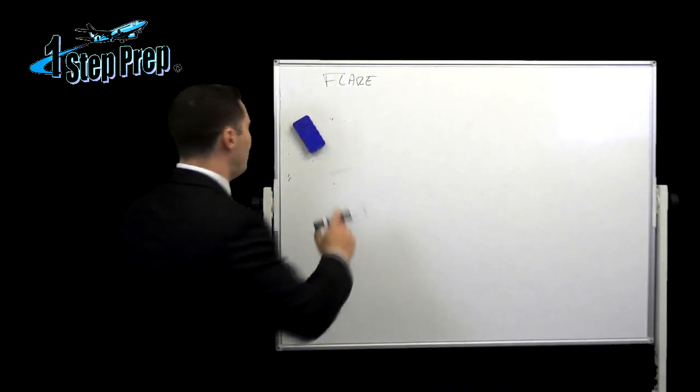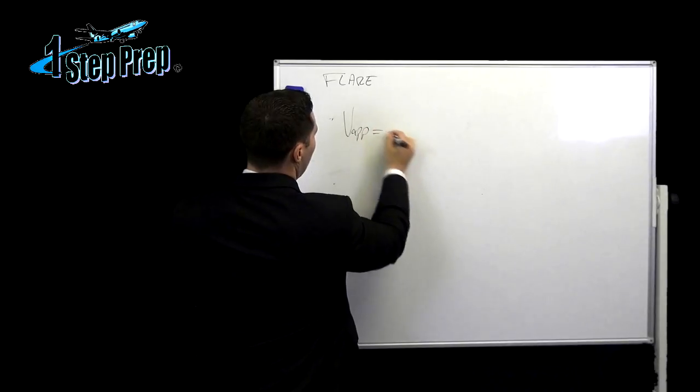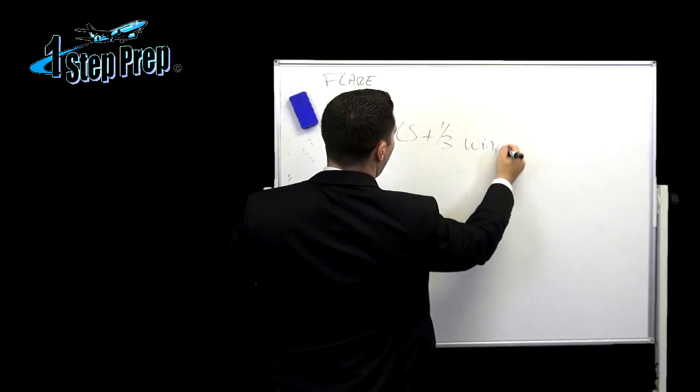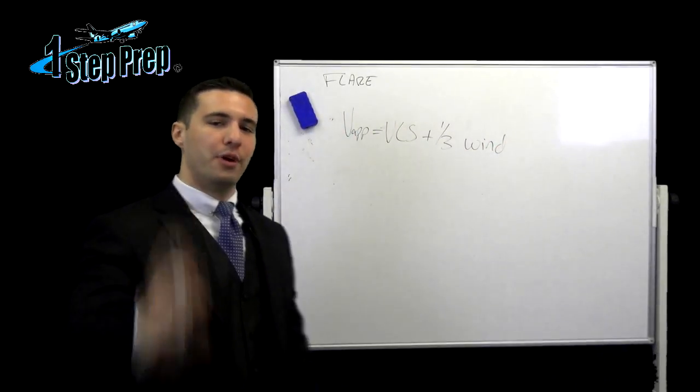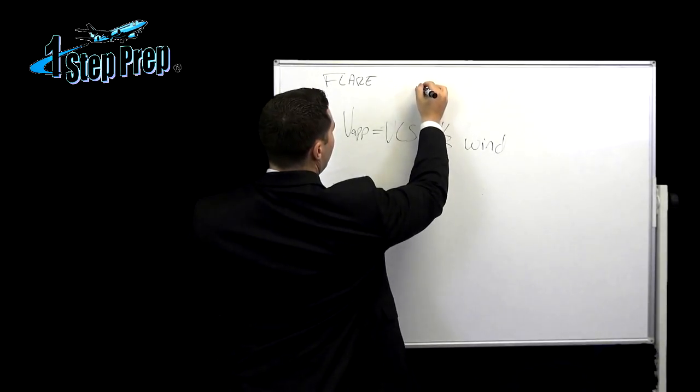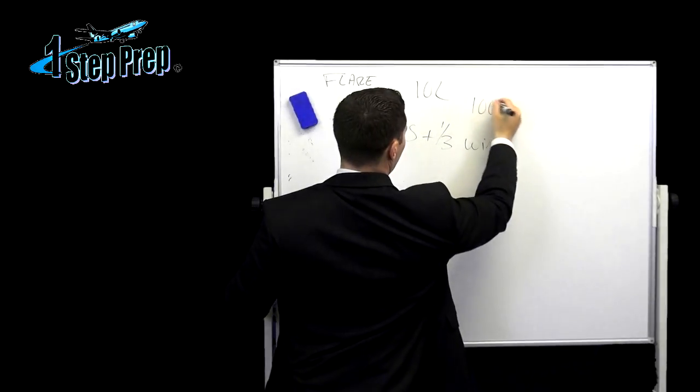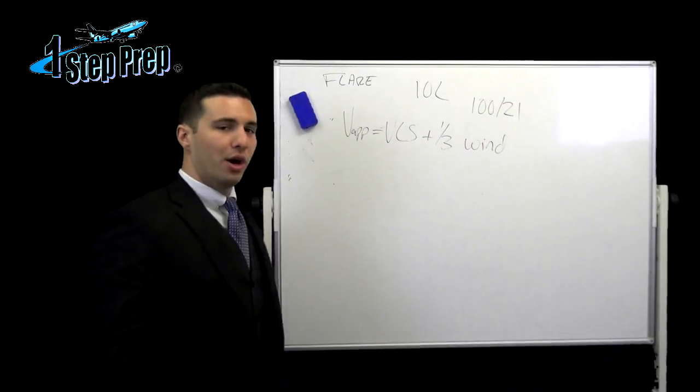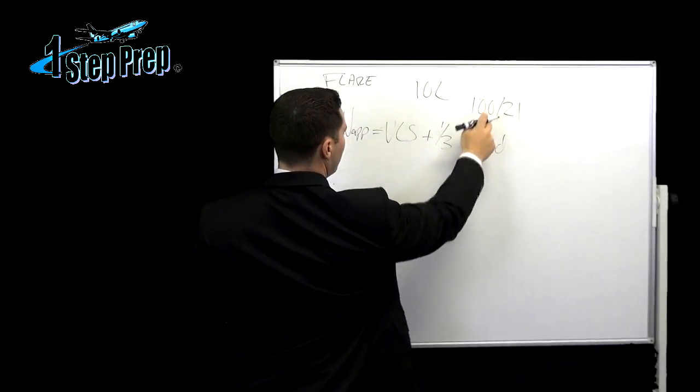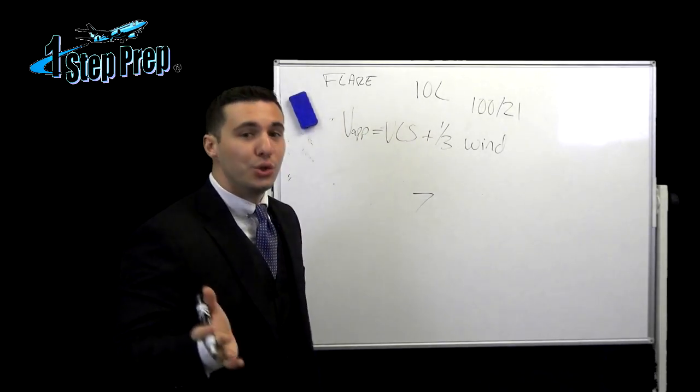How does the airplane do that? The first thing you need to understand is what V app is. V app in this aircraft equals VLS plus one third of the wind component that you enter on the perf approach page. Let me give you an example of this. Let's say we're landing on runway one zero left and the wind happens to be one zero zero at 21 knots. What is a third of 21? Seven.